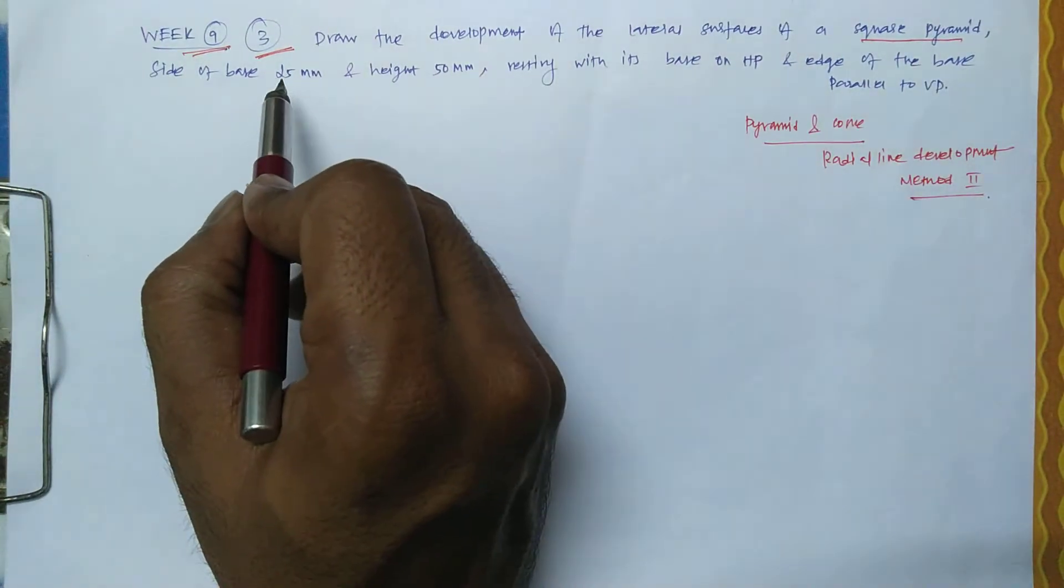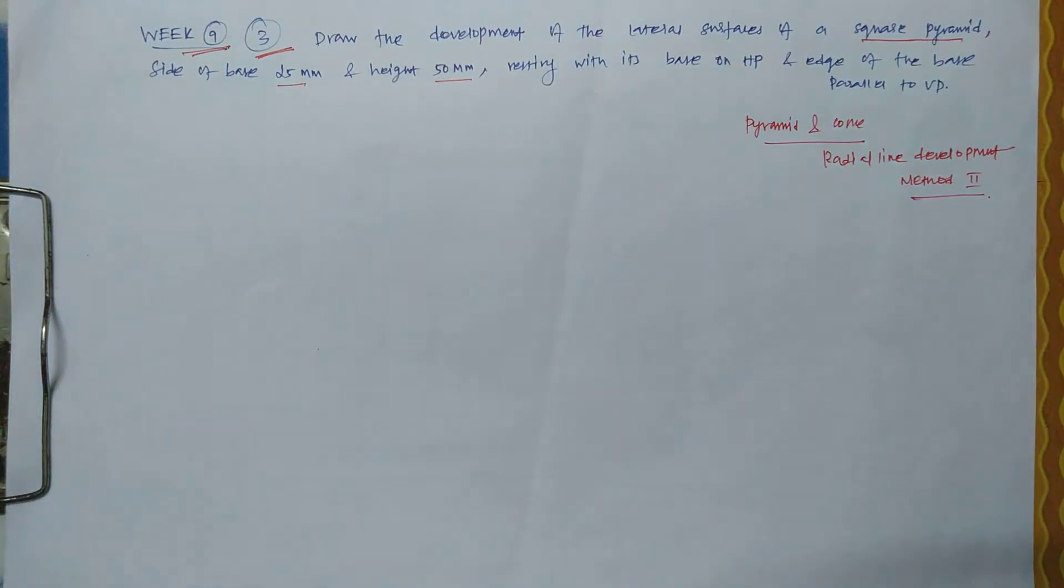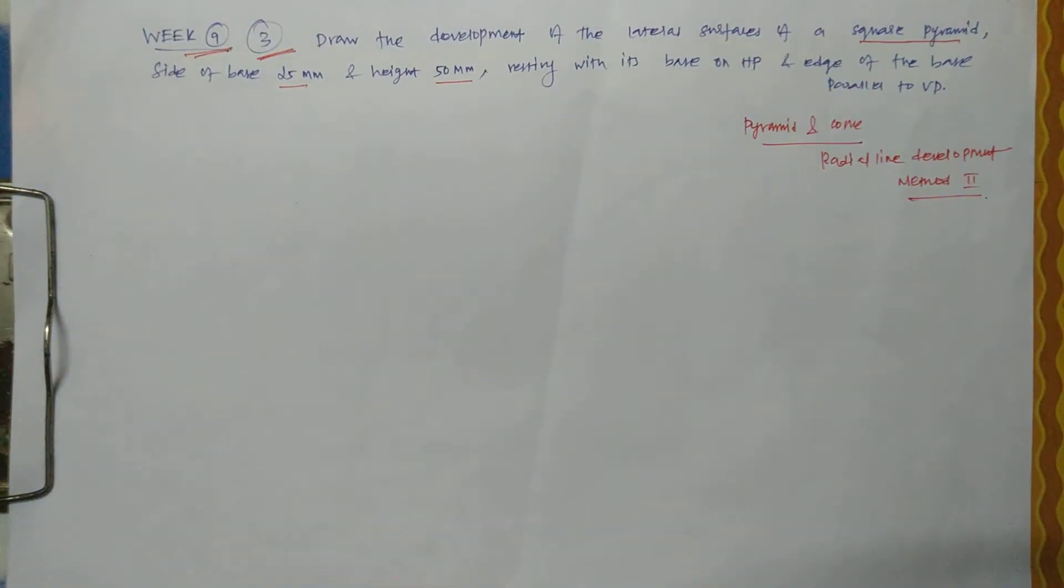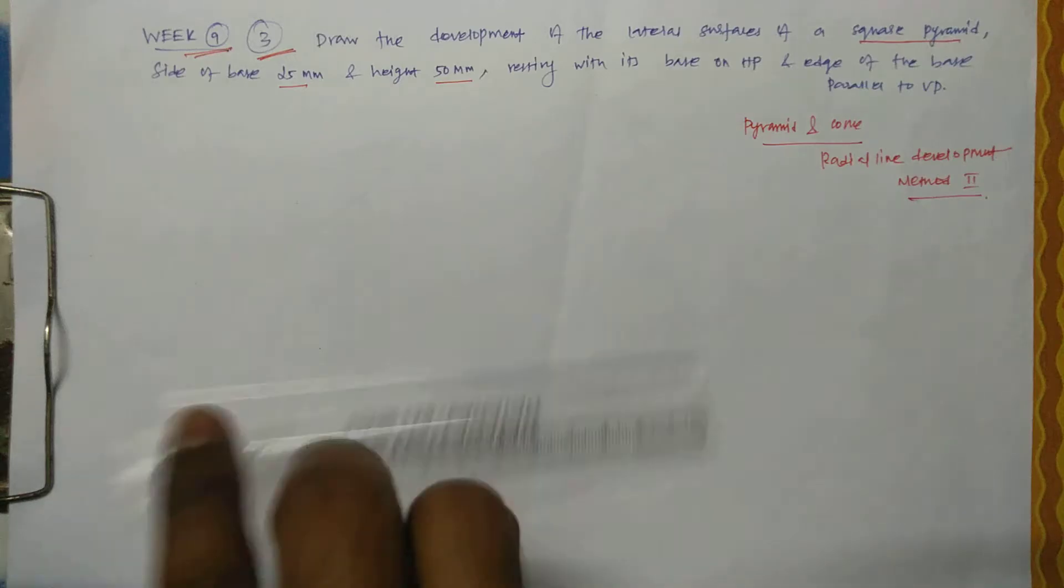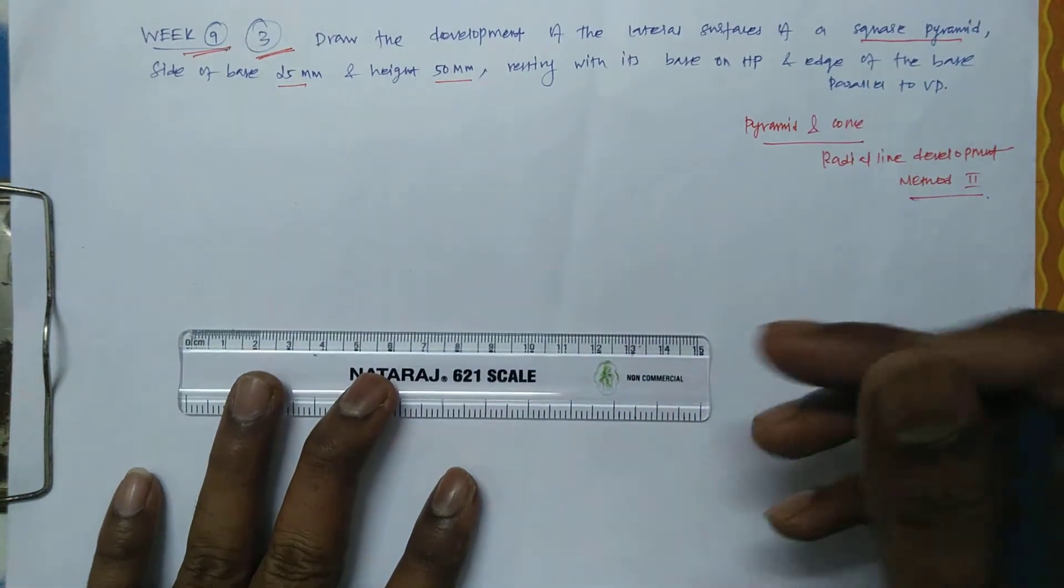So the square pyramid side base is 25mm and height is 50mm resting with its base on HP. So let us draw the simple position first, then we will narrate the development. The radial line development will slightly differ than the parallel line development.